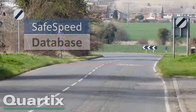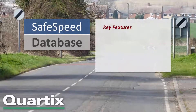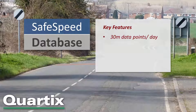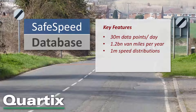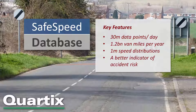The key features of the database are: it processes 30 million vehicle events per day, updating the data in real time. That information is drawn from more than one billion miles covered by commercial vehicles every year. Currently there are more than one million representative distributions in the database, making it an immensely powerful tool in helping to assess the risk associated with speeding.